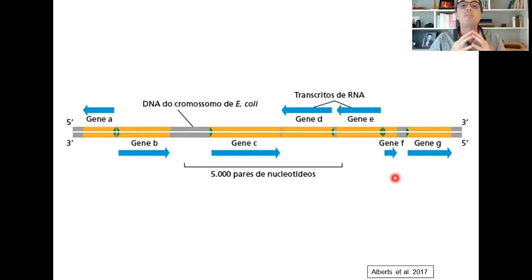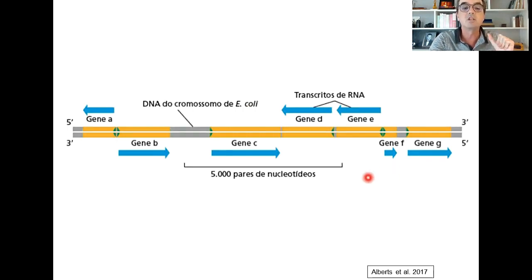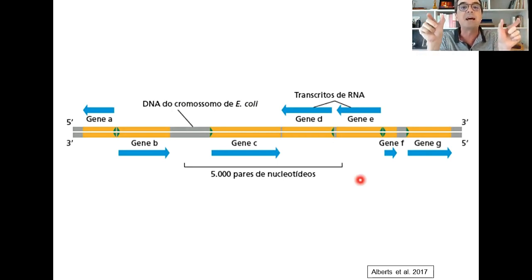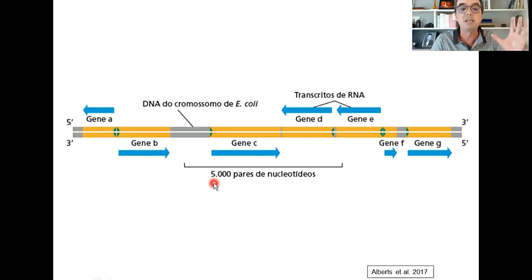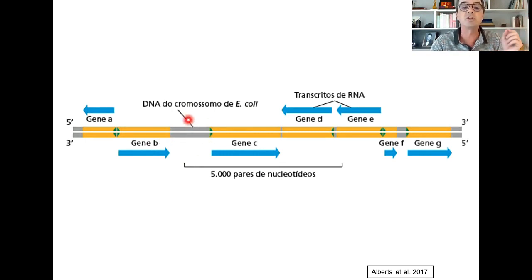Vamos compreender outro aspecto muito importante da vida celular. Aqui damos o exemplo de uma bactéria E. coli, mas também poderia ser em organismos eucariotos. Numa mesma dupla fita, numa mesma longa molécula de DNA, nós contemos vários trechos que são transcritos em diferentes momentos e em diferentes circunstâncias. Esses trechos nós vamos chamar de genes. Podemos ter uma mesma dupla hélice com vários genes vizinhos. Entre um gene e outro pode ter um espaço sem informação nenhuma — um espaço intergênico — mas também podemos ter genes bem vizinhos, quase adjacentes.